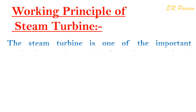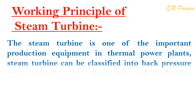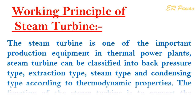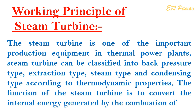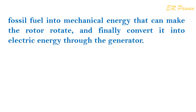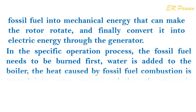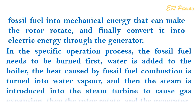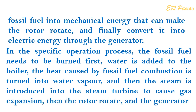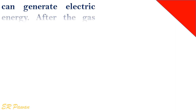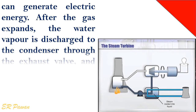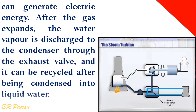The steam turbine is one of the important production equipment in thermal power plants. Steam turbines can be classified into back pressure type, extraction type, and condensing type according to thermodynamic properties. The function of the steam turbine is to convert the internal energy generated by the combustion of fossil fuel into mechanical energy that makes the rotor rotate, and finally convert it into electric energy through the generator. In the operation process, fossil fuel is burned first, water is added to the boiler, heat from combustion turns into water vapor, the steam is introduced into the turbine causing gas expansion and rotor rotation, and after expansion, the water vapor is discharged to the condenser through the exhaust valve and recycled after being condensed into liquid water.